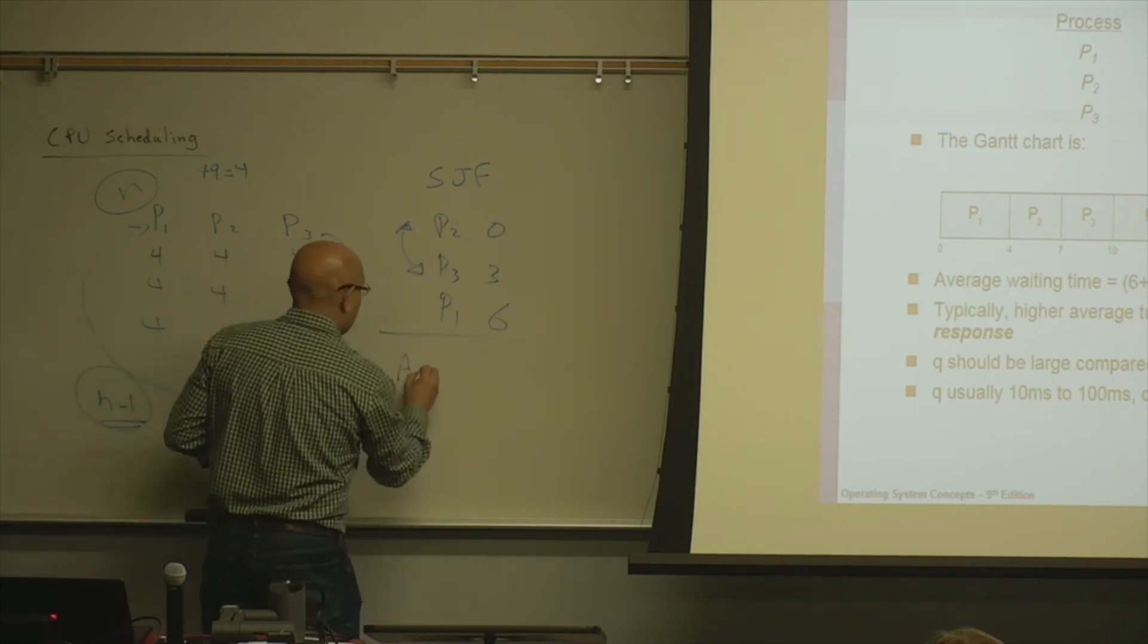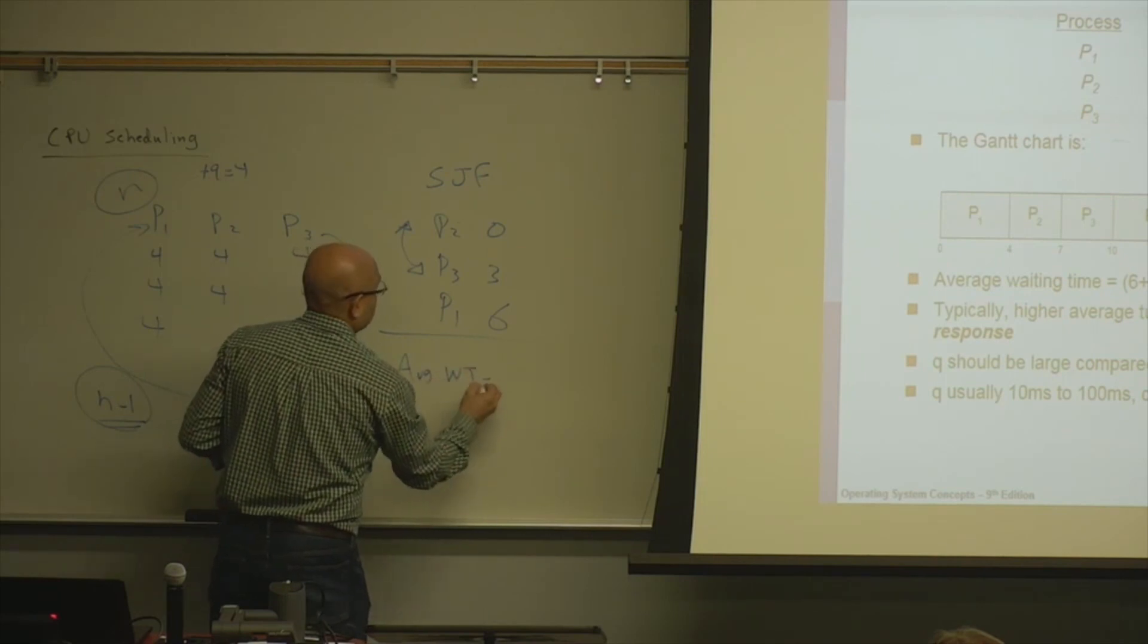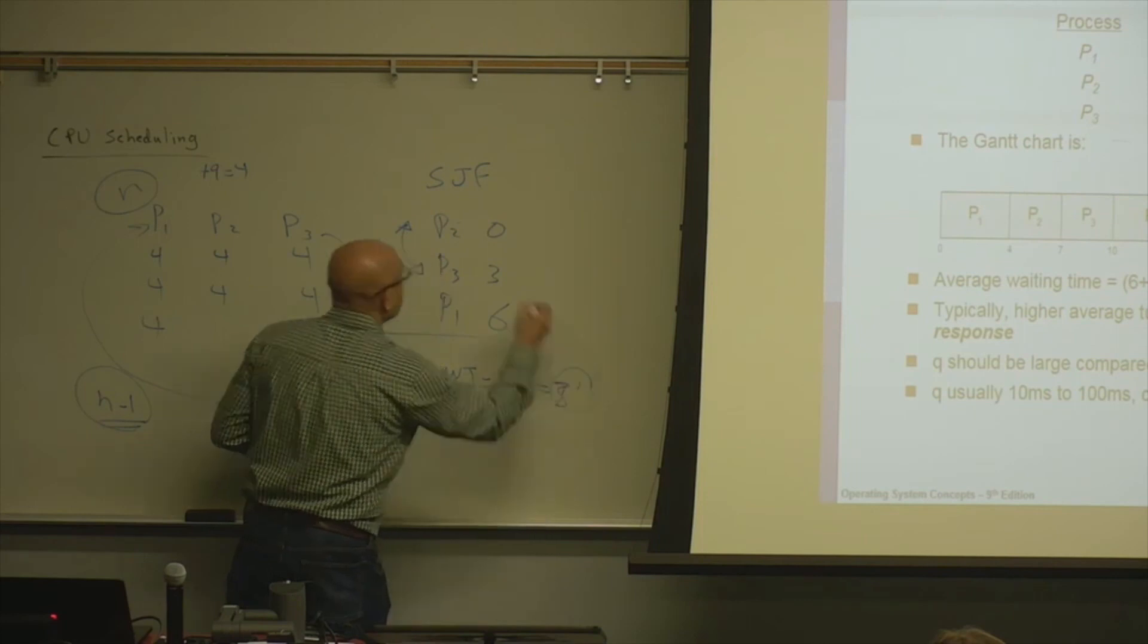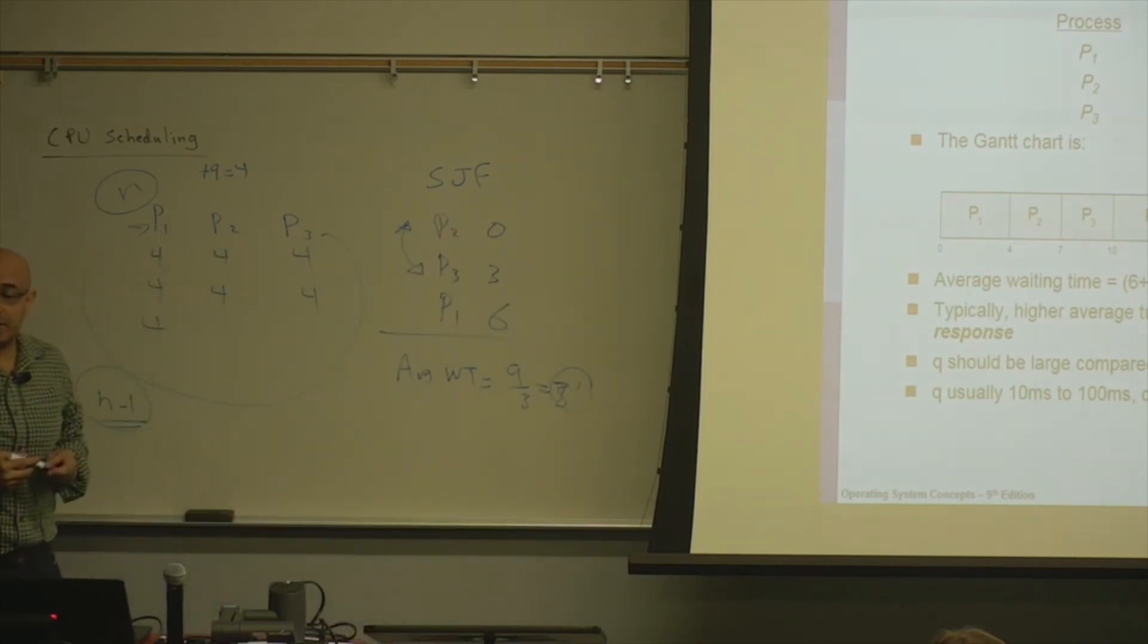And the average waiting time will be what? Nine divided by three, which is three. So shortest job first will definitely give you a shorter average waiting time.